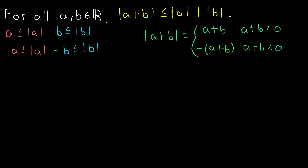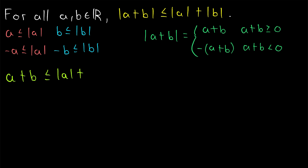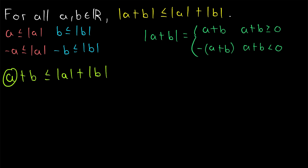Then we can easily work our way through to our desired conclusion. Let's start with a plus b. What do we know about a plus b? Well, certainly it's less than or equal to the absolute value of a plus the absolute value of b, since we just remarked that a is less than or equal to its absolute value, and b is less than or equal to its absolute value. So if we replace them both with bigger numbers, we get a bigger number.